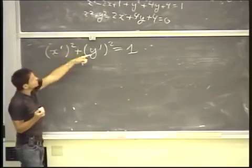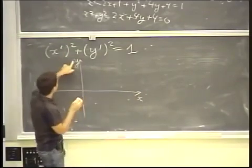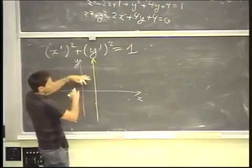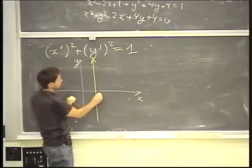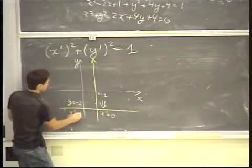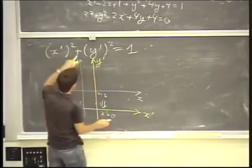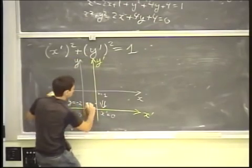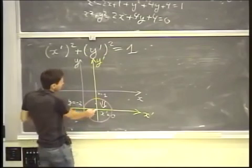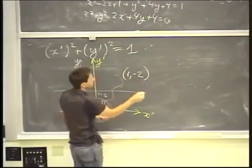But if you complete the square and introduce new coordinates x prime equals x minus 1 and y prime equals y plus 2, you end up with x prime squared plus y prime squared equals 1. That's a circle of radius 1 — but with respect to the new coordinates. What does it mean for the original problem? It simply means we've shifted the origin: the y-axis shifted by 1, so x equals 1 corresponds to x prime equals 0, and y equals negative 2 corresponds to y prime equals 0.